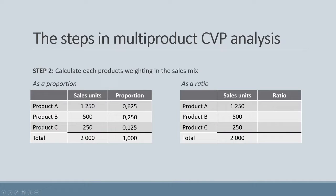Under the ratio method, we are expressing our sales in terms of the lowest common factor. Product C has the smallest sales units of 250. If we take 250 and divide by 250, we get 1. We can then divide product A and product B by 250 to get 5 units and 2 units respectively, giving us a total batch size of 8 units.